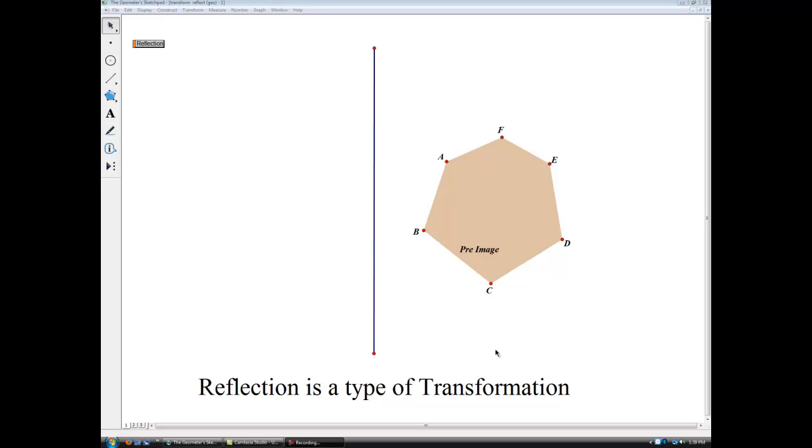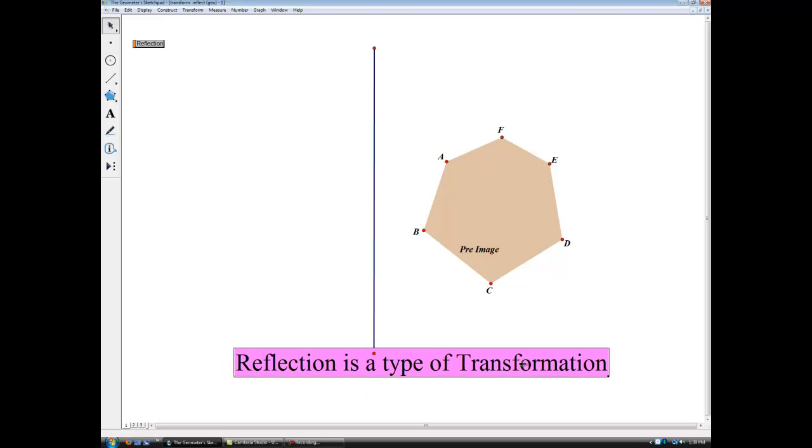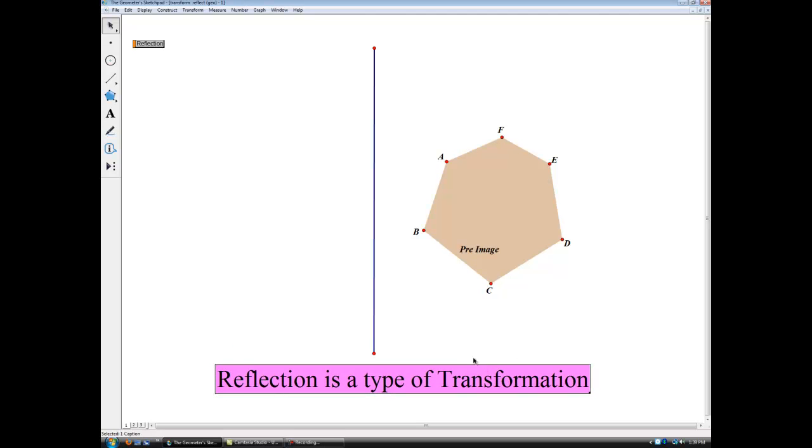Hello, this is a geometry video on the topic of transformations. The first type of transformation we're going to look at is a reflection. Transformation, if you're not clear what that means, is you take something in geometry and you either move it or change its size, or both.